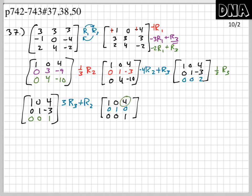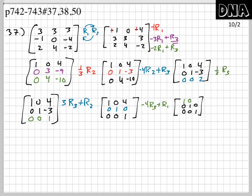One more number to handle: the 4 in row 1, column 3. I'll use row 3 again — multiply it by negative 4 and add to row 1. The 0s in columns 1 and 2 of row 3 mean those entries in row 1 don't change: 1 stays, 0 stays. Then 1 × (−4) + 4 = 0. Row 1 becomes 1, 0, 0.